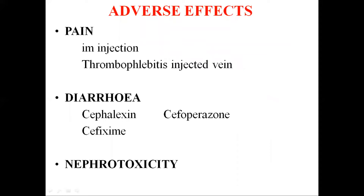Pain is an adverse effect occurring due to intramuscular injection. It occurs with many cephalosporins; some can be injected intramuscularly while others, like the 4th and 5th generation cephalosporins, are mostly given by IV injections. Thrombophlebitis of the injected vein can also occur.